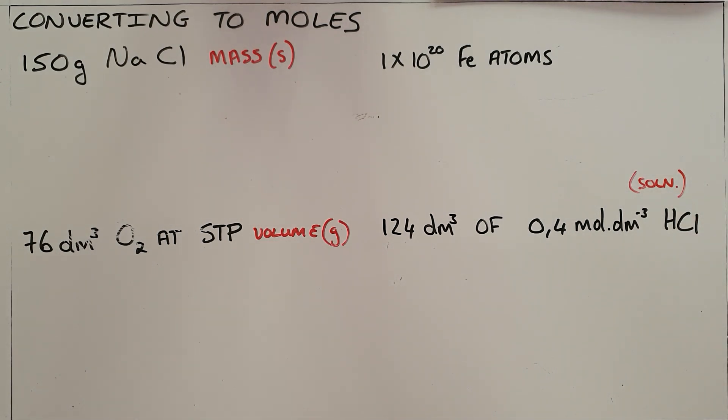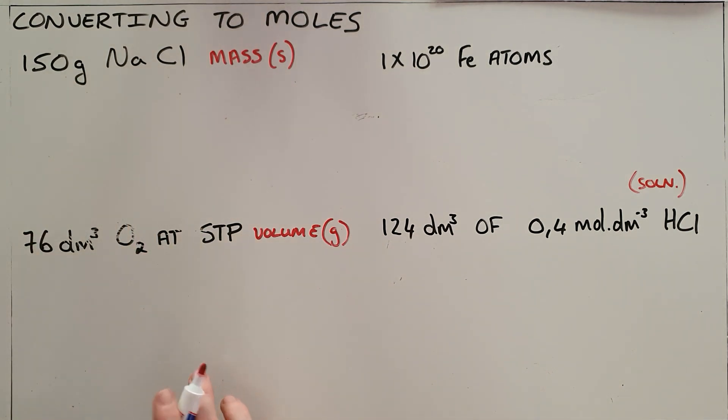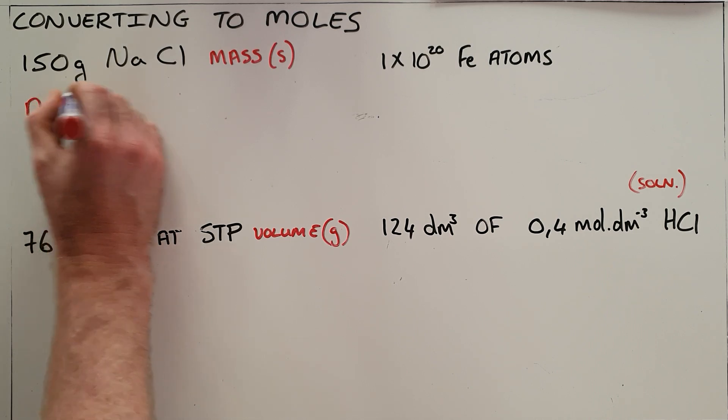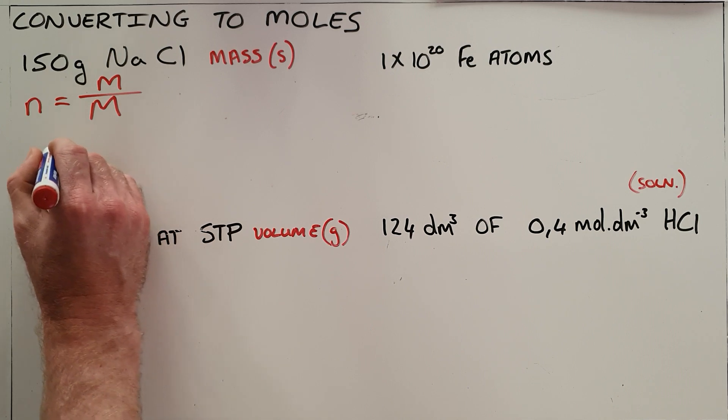Now there are formulae for each of these. We'll start with converting a mass to a number of moles. We say that the number of moles of a substance is equal to the mass of that substance divided by the molar mass of that substance.